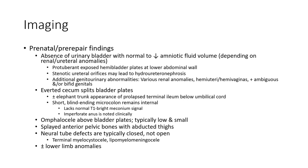On average, a large split bladder appears flat, plus or minus an elephant trunk appearance, or a prolapsed terminal ileum below the umbilical cord — short, blind-ending. A microcolon remains internal. The omphalocele above the bladder appears flat, typically low and small.